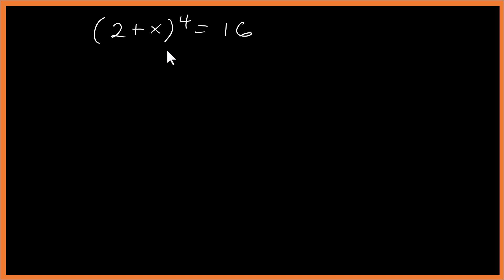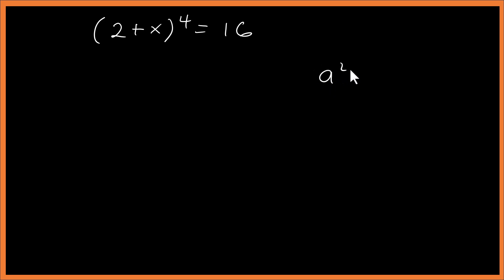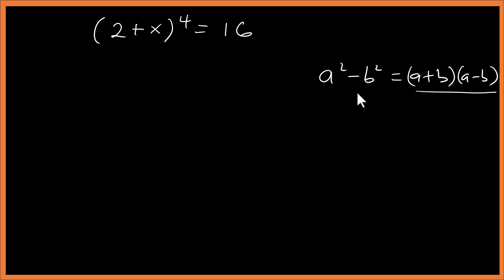We know 16 can be written as 4 squared. The idea is to make use of the difference of two squares, because we can write 16 as 4 squared. Recall that a squared minus b squared is the same as (a + b)(a - b). So we write this as (2 + x) squared.